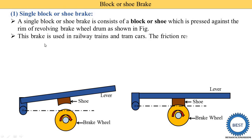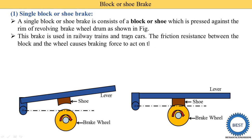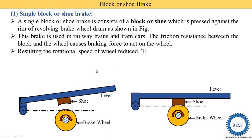This brake is used in railway trains and drum cars. The frictional resistance between the block and the wheel causes the braking force to act on the wheel. When the shoe and the wheel come in contact, frictional resistance is created, which reduces the wheel's speed or stops it completely. The Prony brake is an example of a block brake.